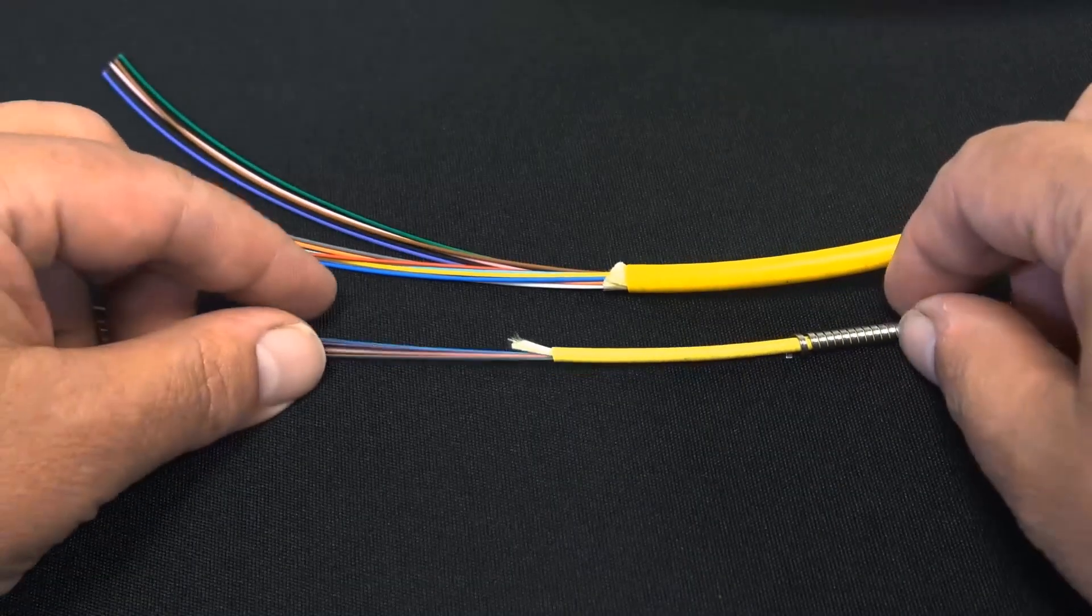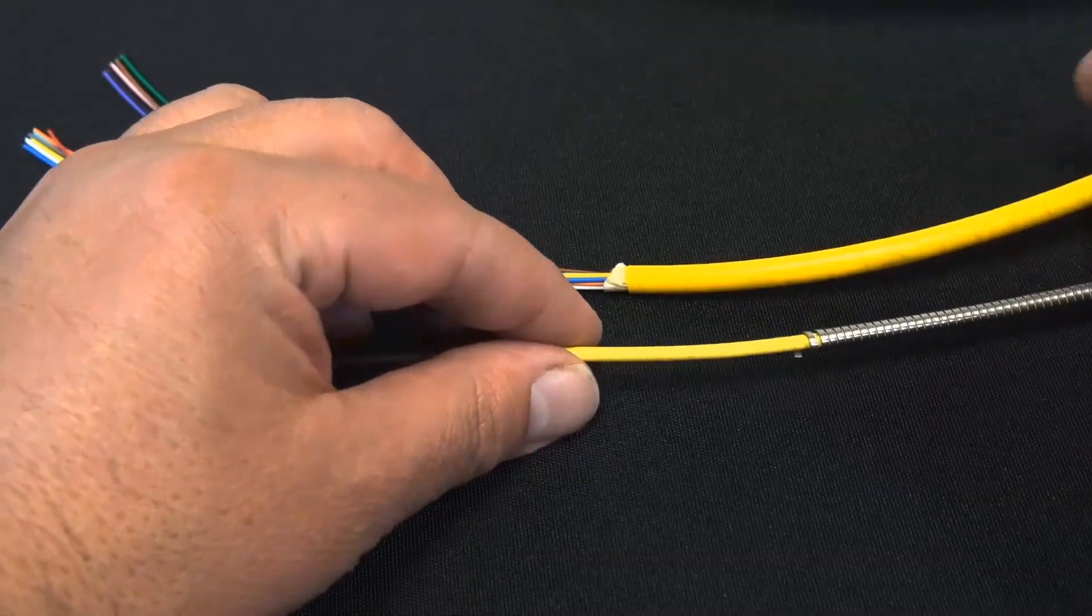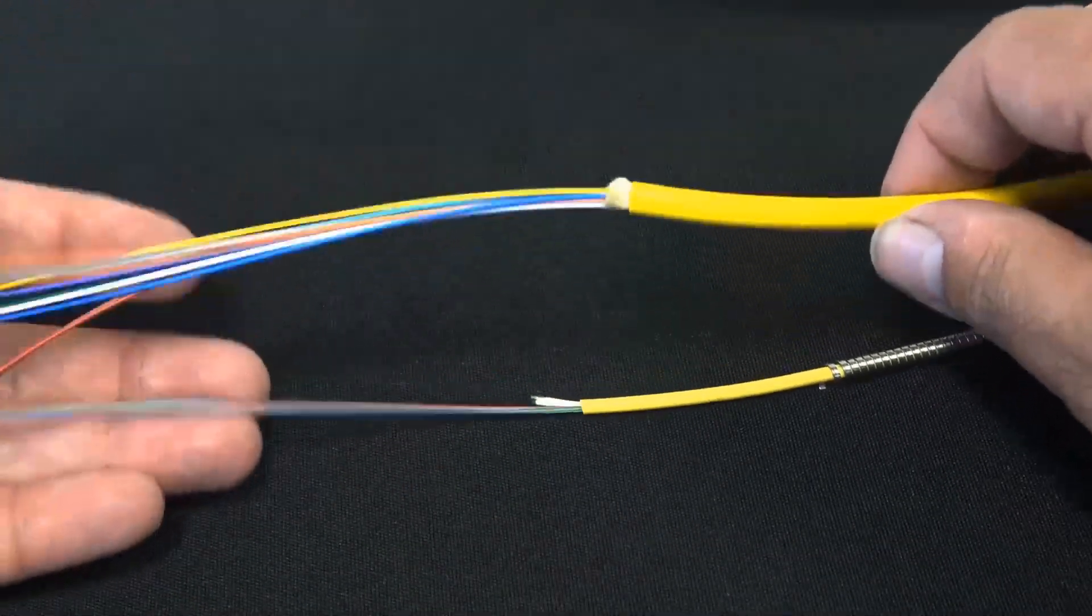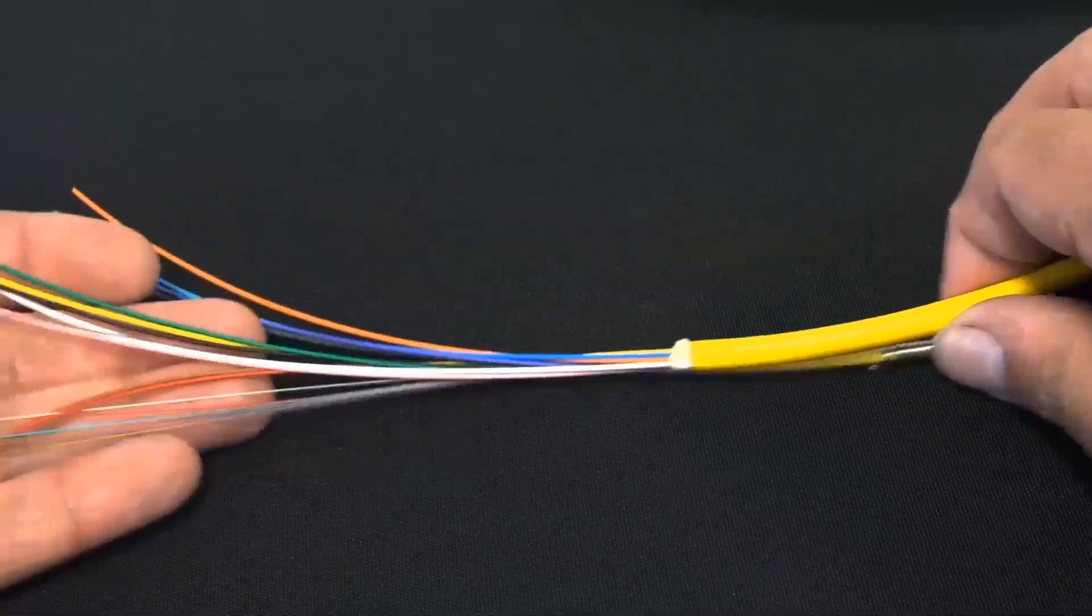The jack gets smaller underneath the armored, of course. And the nanofiber uses a 250 UM size strand compared to the 900 buffer.